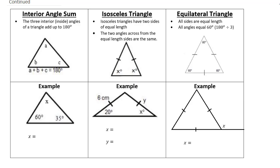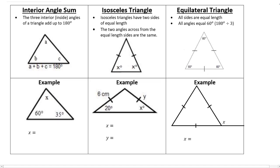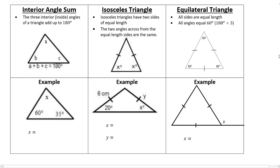The next three rules deal with triangles. The first and most important is the interior angle sum rule. This rule says that no matter what triangle you're looking at — equilateral, isosceles, scalene, any triangle — all the angles inside always add up to make 180 degrees.